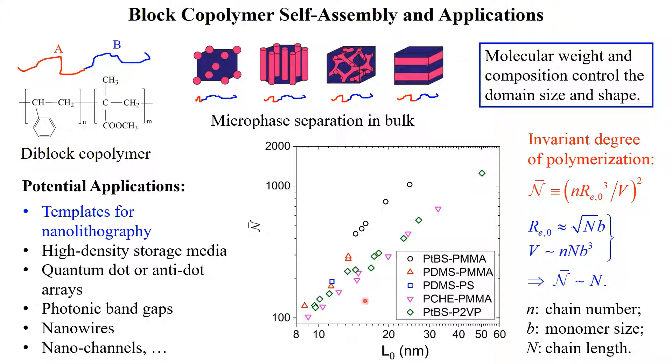From this plot, we see that diblock copolymers producing sub-10nm domain sizes have n-bar values on the order of hundreds. It is therefore important to study and understand the large fluctuation effects in low molecular weight block copolymers.